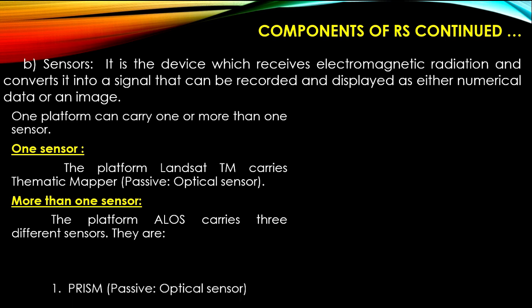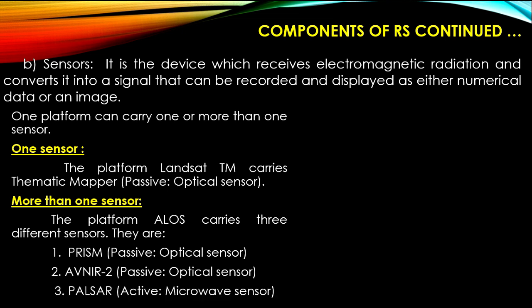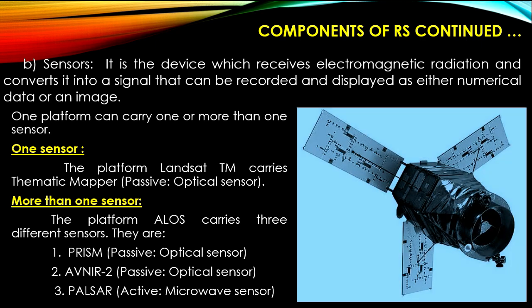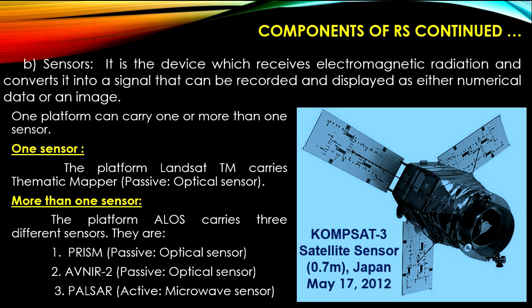The three sensors on ALOS are: one, PRISM — a passive optical sensor; two, AVNIR-2 — also a passive optical sensor; and three, PALSAR — an active microwave sensor. Here is a sensor example: KOMPSAT-3, a satellite sensor with spatial resolution of 0.7 meters, launched by Japan on May 17, 2012.